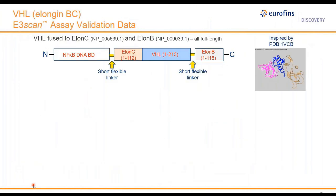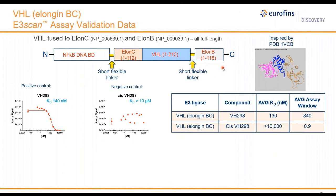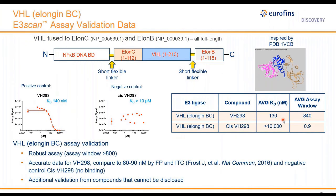Here is shown an assay for VHL, which is considered a complex E3 ligase — it requires other partner proteins in a complex to be active. For this assay, we cloned full-length VHL fused to its partner proteins elongin B and C, based on a published crystal structure. We validated the assay against positive and negative control inhibitors, and the KD values obtained match those obtained using fluorescence polarization and ITC techniques. The assay window for the positive control inhibitor VH298 is very robust, at more than 800-fold.